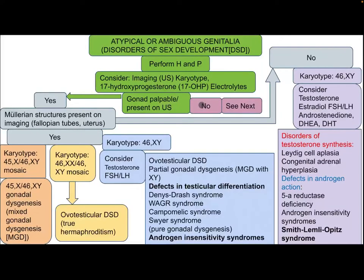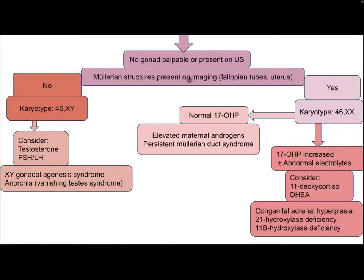If there are no gonads palpable or present on ultrasound, but Müllerian structures are present on imaging such as fallopian tubes and uterus, and the karyotype is 46XY, consider testosterone, FSH, and LH. The differential diagnosis includes XY gonadal agenesis syndrome, anarchia, and vanishing testicular syndrome.